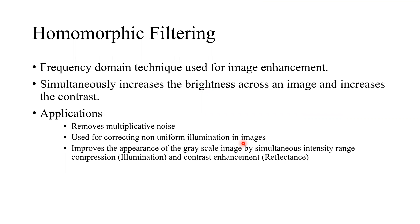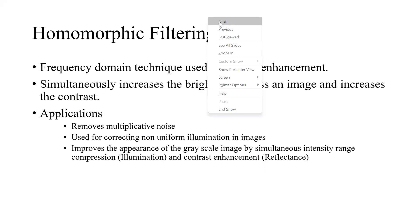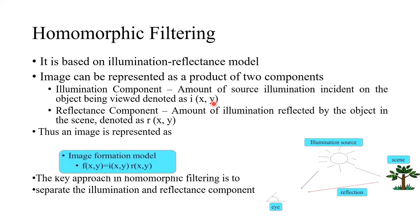The image can be completely converted into a uniformly illuminated image. It also improves the appearance of a grayscale image by simultaneous intensity range compression, which is called illumination, and contrast enhancement, which is called reflectance. So, just by normalizing the brightness across an image through grayscale compression and increasing the contrast, called reflectance, homomorphic filtering helps in image enhancement. It is based on the illumination-reflectance model.